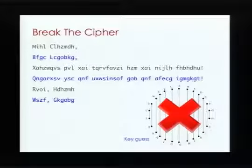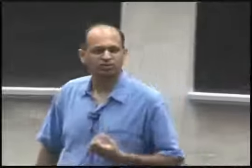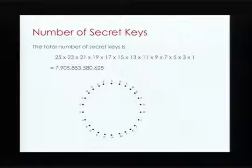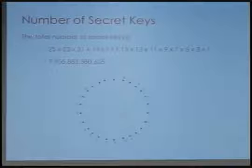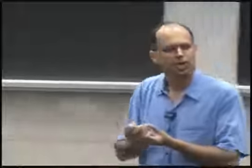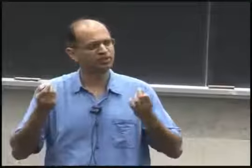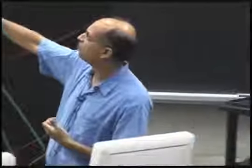The question is how long will it take to find the right key. The total number of keys is roughly 7.9 trillion. When Alice picks a secret key, she first pairs A with one of 25 other letters — 25 choices. Once A is paired, she pairs B with one of 23 remaining letters — 23 choices. Then 21 choices for the next, and so on. The total is 25 × 23 × 21 × 19 … × 5 × 3 × 1, which is about 7.9 trillion.